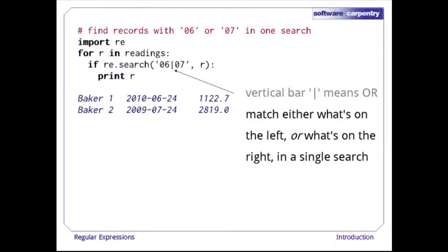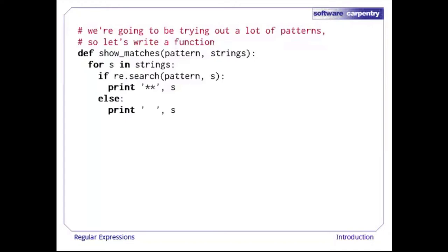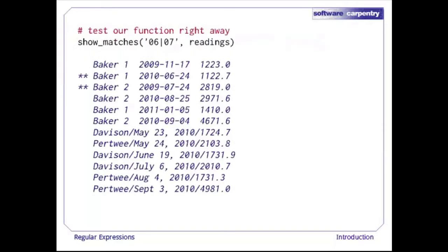We're doing the match in a single search. Since we'll be trying to match a lot of patterns against our data, let's write a function called show_matches that takes the pattern and a list of strings. For each string, if the pattern matches, we print two stars as a marker; otherwise we print blanks. If we try to match '06' or '07' against our data, it seems to be doing the right thing.